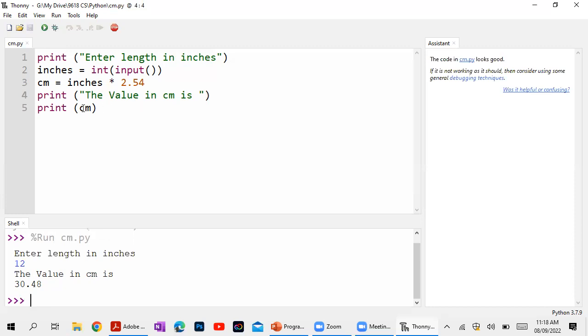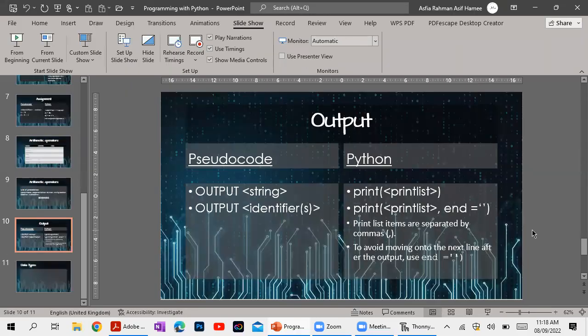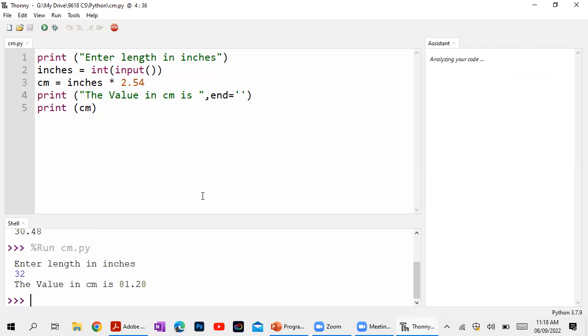The value in cm is and then it goes to the next line. So what if I don't want to go there? See over here we have end equal to - to avoid moving on to the next line after the output use end equal. Now the whole print is in a single line. Also with this one.